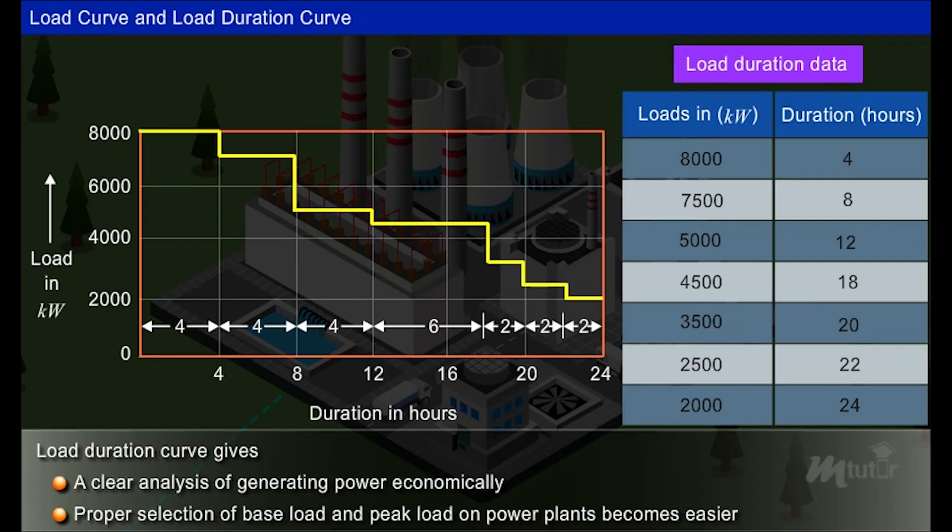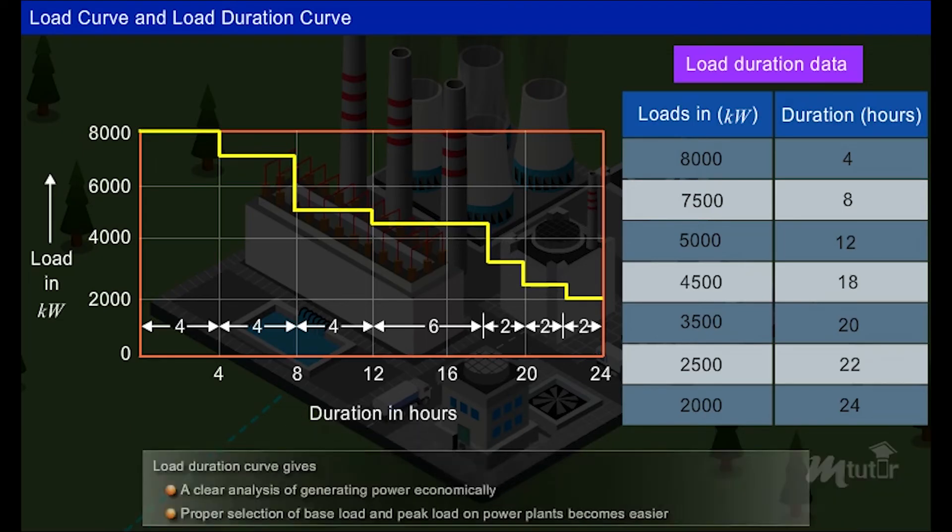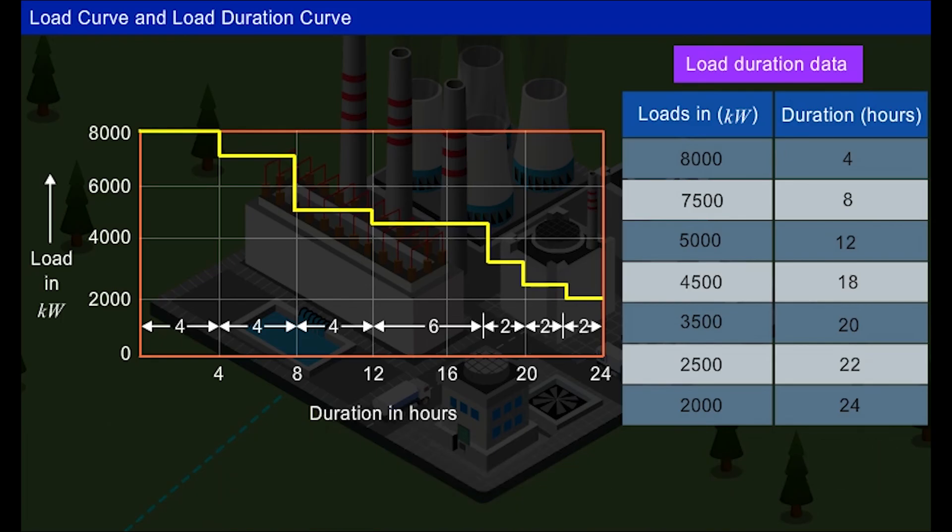Proper selection of base load and peak load on power plants becomes easier. For the Lovacity, the peak load is 8000 kilowatt for the duration of 4 hours and the base load is 2000 kilowatt for the duration of 24 hours.